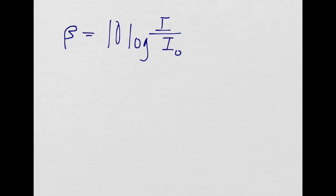And I-naught is the faintest sound that the human ear can detect, which is 10 to the negative 12 watts per square meter. So this is just like a constant to give you some kind of reference point to how intense your sound is. So this is 10 to the negative 12 watts per square meter, which is pretty soft.